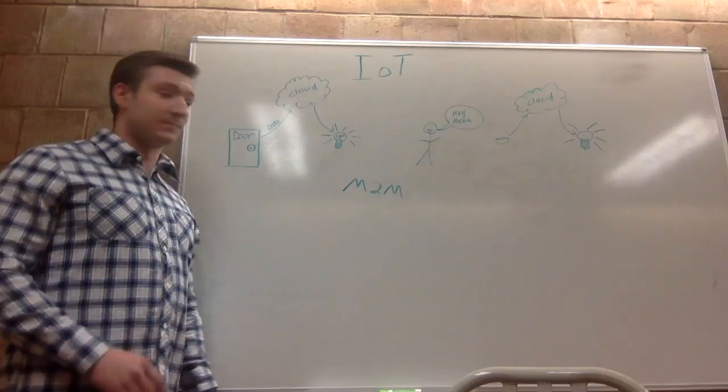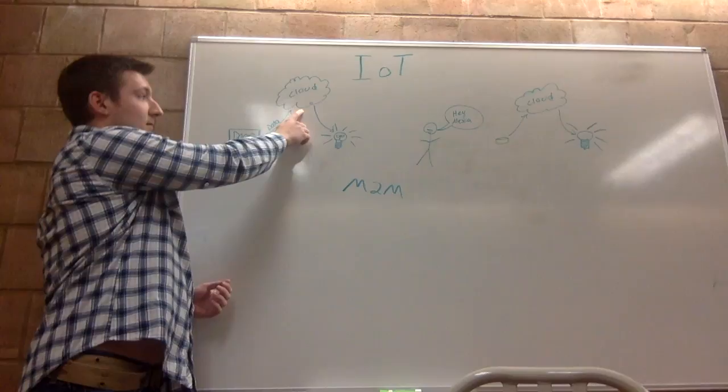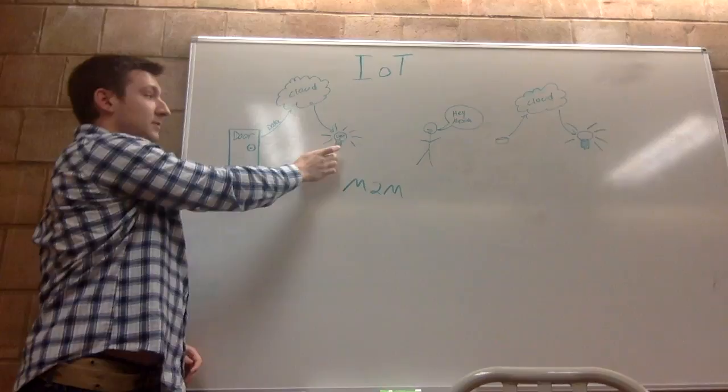The way with different sensors is, say for example we have a door, and the door would detect whether it's opened or closed. Then once you open the door, it would send that message up to the cloud. The cloud would then go and interpret that, and based on the status of the light, it could then go and turn on or off the light.